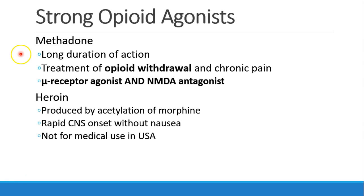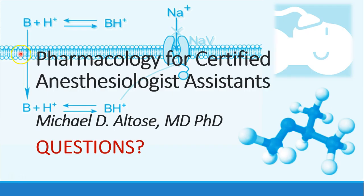Methadone is a strong agonist with a much longer duration of action, used in the treatment of opioid withdrawal and chronic pain syndromes. It is not only a mu-receptor agonist but also an NMDA antagonist, similar to ketamine. Heroin is produced by acetylation of morphine, has a very quick CNS onset, doesn't cause much nausea, and is commonly used illicitly for euphoria, but is not used for medical purposes in the U.S. or commonly elsewhere. That concludes our first section — please let me know if you have any questions.